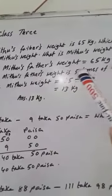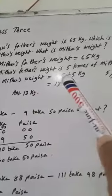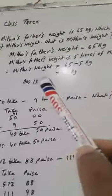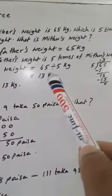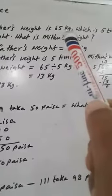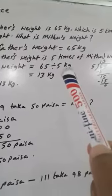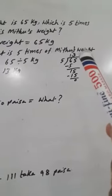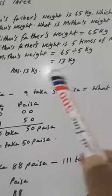Mithu's father's weight equals 65 kg, and it is 5 times Mithu's weight. Therefore, Mithu's weight equals 65 divided by 5, because the father's weight is 5 times, so we have to divide by 5. If 65 is divided by 5, the answer is 13. Therefore, Mithu's weight is 13 kg.